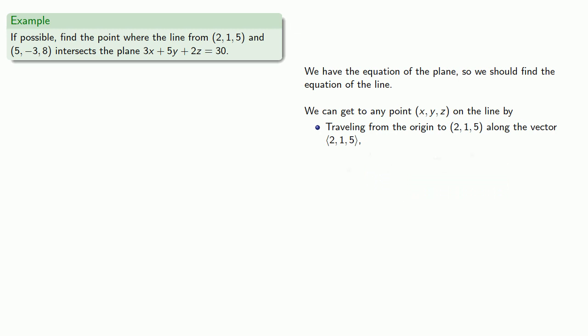And then we can travel from (2, 1, 5) towards (5, -3, 8) along the vector (3, -4, 3). And so we can write the vector equation of the line: go to (2, 1, 5), and then any scalar multiple in the direction (3, -4, 3).